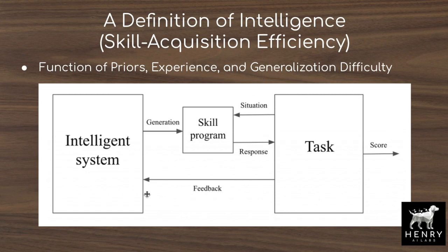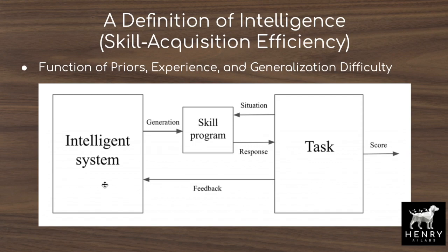This overall framework describes the intelligence system producing a skill-based program — like the weights of a trained classifier — interacting with the task in a reinforcement learning MDP-like framework, receiving states and rewards. The task sends feedback back to the intelligence system, which could be the machine learning development community itself. We get feedback and iterate, producing more priors like consistency regularization, self-training with noisy student, and other techniques.